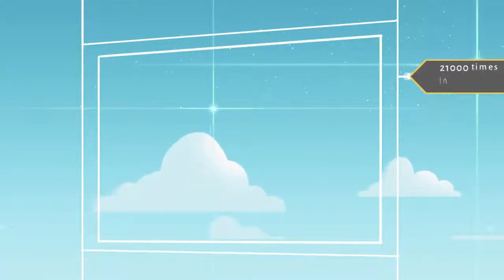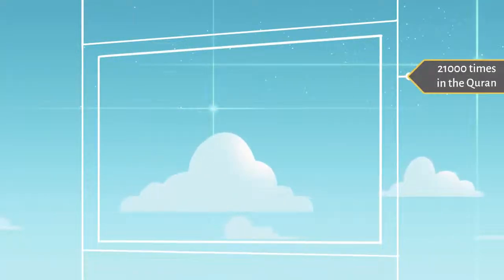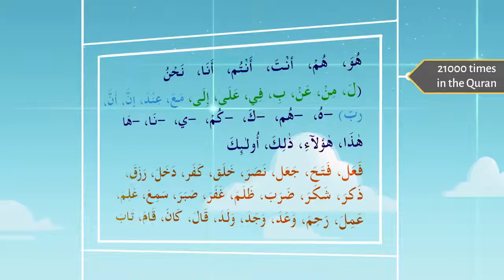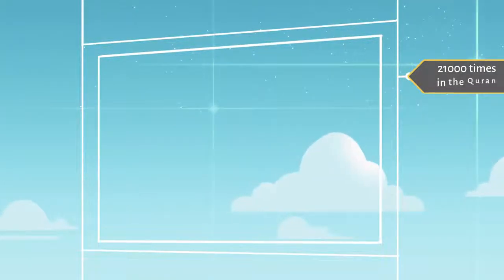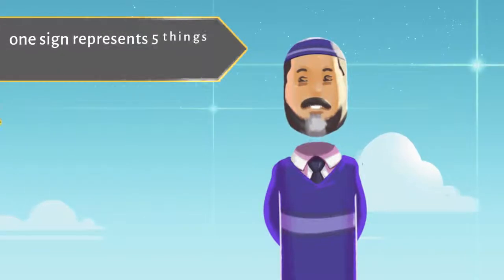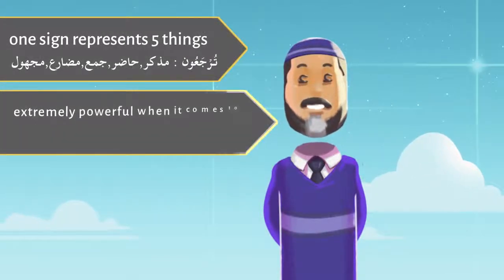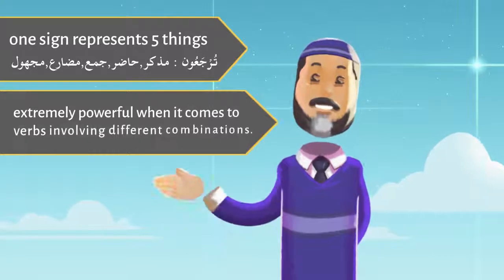In this course, through TPI, you will learn 50 words that occur 21,000 times in the Quran. And here are those words. Later on, you will find TPI to be extremely useful for explaining Quranic words also. For example, one sign is enough for five things. It is also extremely powerful when it comes to verbs involving different combinations.